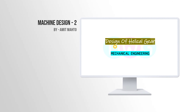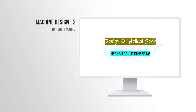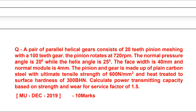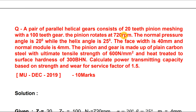In this video we will study design of helical gear. A pair of parallel helical gears consists of a 20-teeth pinion meshing with 100-teeth gear. The pinion rotates at 720 rpm. The normal pressure angle is 20 degrees, helix angle is 25 degrees, face width is 40 mm, and normal module is 4 mm. The pinion and gear are made of plain carbon steel with ultimate tensile strength of 600 N/mm² and surface hardness of 300 BHN. Calculate power transmitting capacity based on strength and wear for a service factor of 1.5.